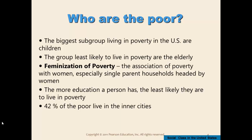Despite being mentioned as a demographic risk group, the elderly are actually the group least likely to live in poverty today — largely due to the existence of the Social Security system. One hundred years ago, the elderly would have been among those living in poverty far more than they are today.